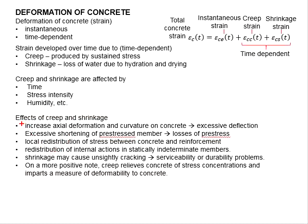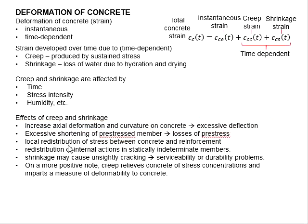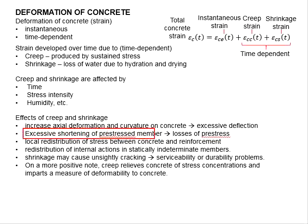The effects of creep and shrinkage include: first, they increase the axial deformations and curvatures of the concrete, which leads to excessive deflections. Excessive deflections of the member encourage cracking, which subsequently degrades the durability of the member.